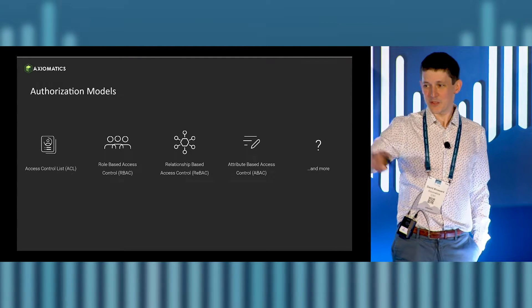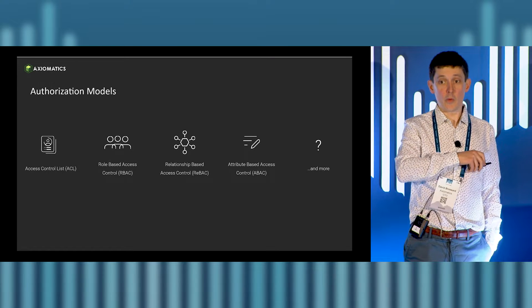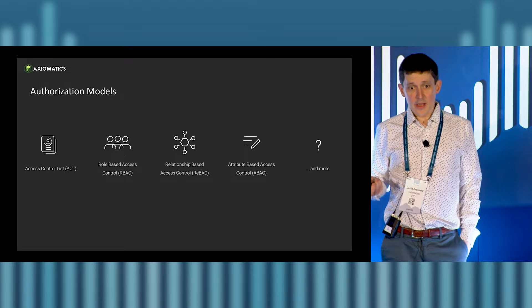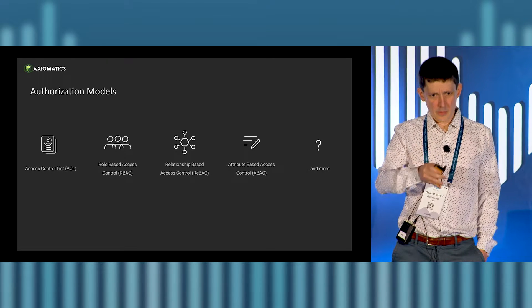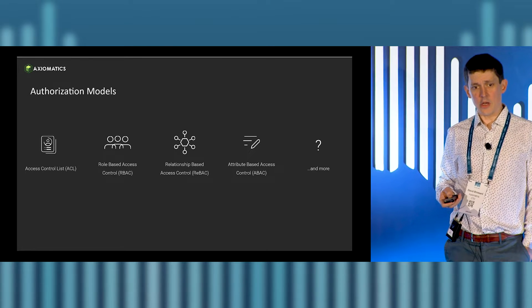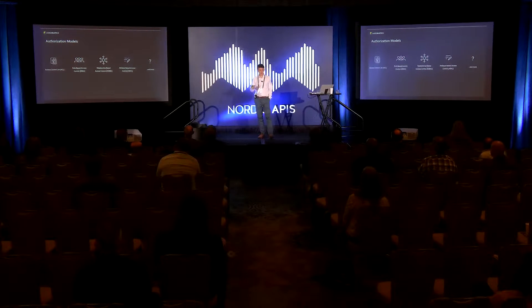Authorization models: there are many different ones. You have access control lists — they've been around forever. Google came up with a model called Zanzibar five or seven years ago, which others also built into a really good authorization model. You have RBAC, role-based access control, been around since 1992 and formalized by NIST. The challenge with both ACL and RBAC is they tend to be identity-centric, so you only cater to half the authorization equation. That's where REBAC — relationship-based access control — and ABAC — attribute-based access control — come in, looking at not only the user but also the resources, contextual data, time of day, location, and so forth.